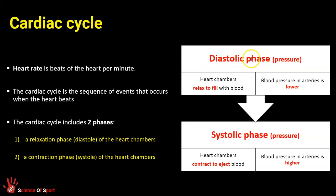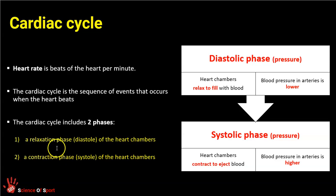During the diastolic phase of the cardiac cycle, the heart is relaxed and the chambers fill with blood. During the systolic phase, the heart chambers contract to eject the blood. During the diastolic phase, blood pressure in the arteries is low because no blood is being ejected from the heart. During the systolic phase — the contraction phase — blood pressure in the arteries is higher. Those are the two terms you need to understand and be able to apply to the process of blood flow through the heart.